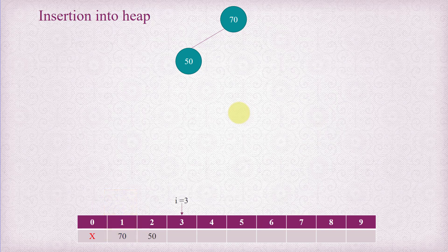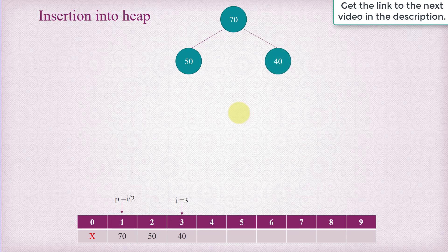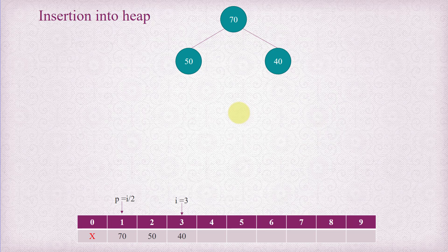Now let's insert one more element. This time i is going to be 3 — the next position in the almost complete binary tree. We insert 40 at index 3. The parent of index 3 is index 1, because 3 divided by 2 is 1.5 and the floor of that is 1. We compare the parent's content, 70, with the newly inserted element, 40. Since 70 is larger than 40, the heap property is maintained and we don't need to do anything.